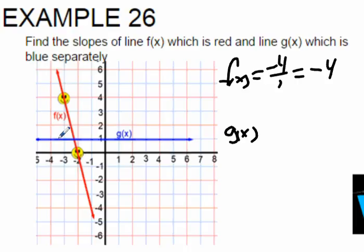g of x is a zero slope. It's not going up positive. It's not going down negative. And the number between positives and negatives is zero. So it is a zero slope.